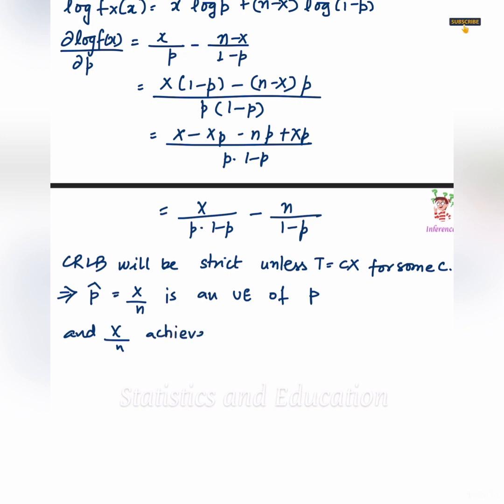So it is a UMVUE. See, Cramer-Rao Lower Bound, likelihood function or sufficient statistic. And if you are able to detect that interrelation, you will be able to solve a lot of questions very easily.